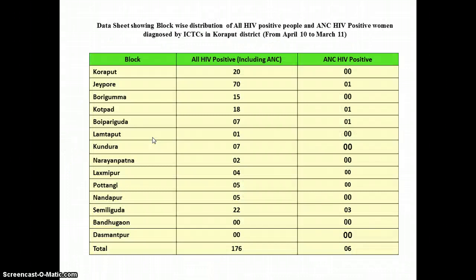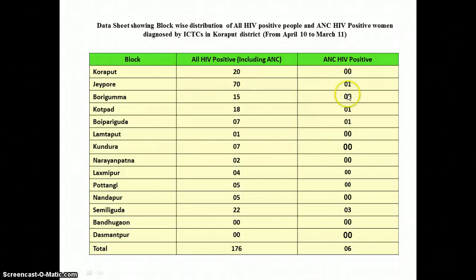This is the summary of HIV positives found. We also have ANC positives here, as you could see. Simdiguda has the maximum number of ANC positives — 3 cases.